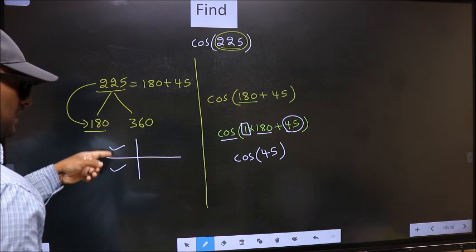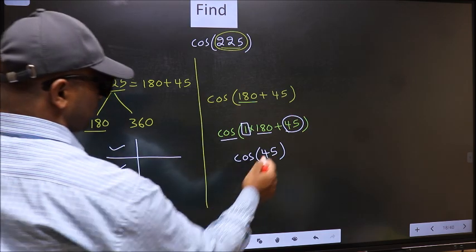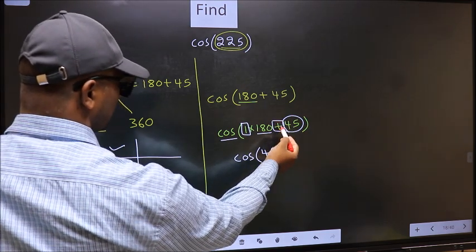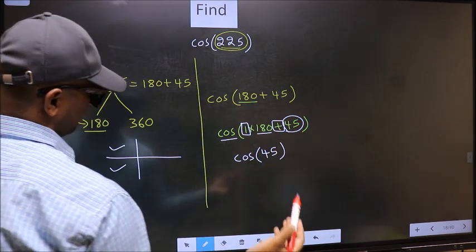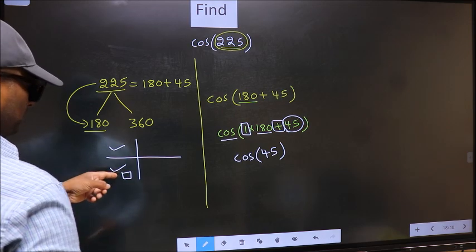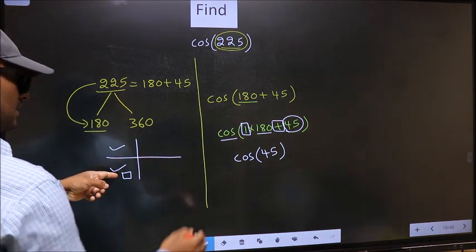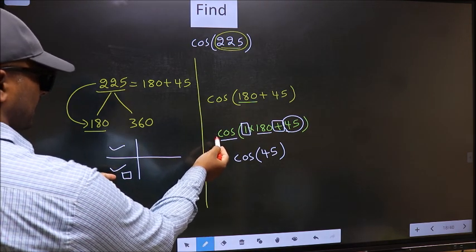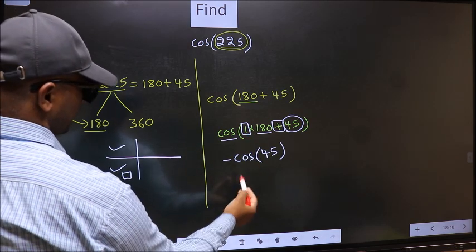So now to select the quadrant, we should look at this symbol. Here we have plus. That means the angle lies in the third quadrant. And in the third quadrant, cos is negative, so we should put negative.